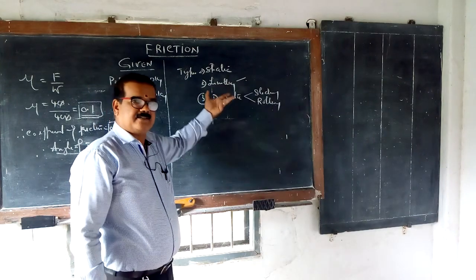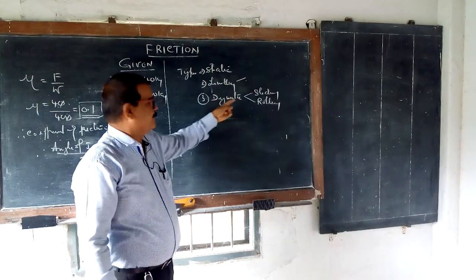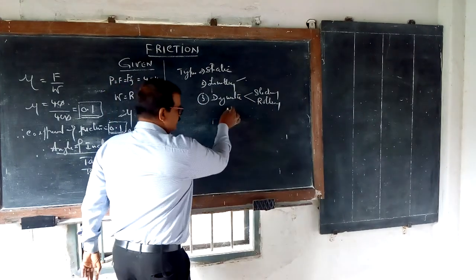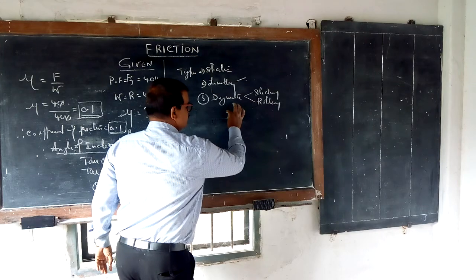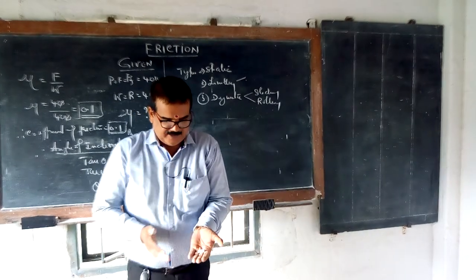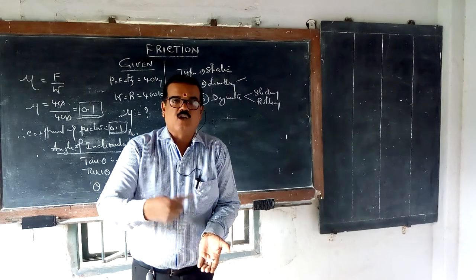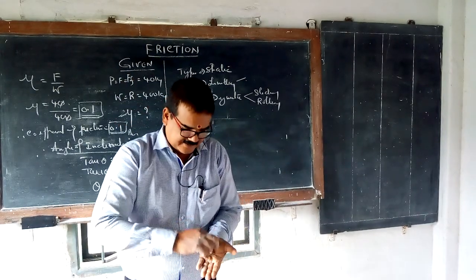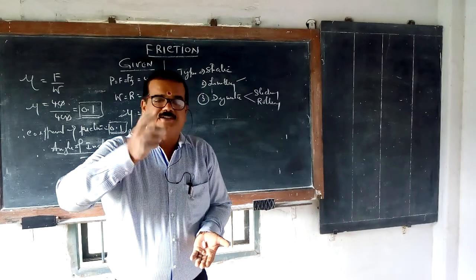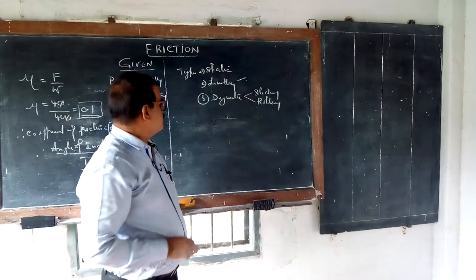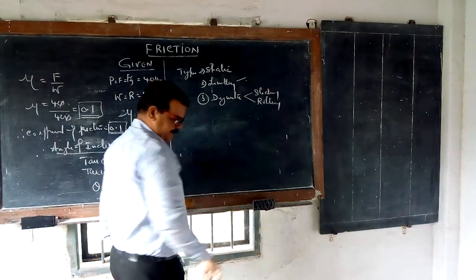At that particular time what the friction created in between is called limiting friction. Now once after it started moving this is called dynamic. There are two things. One is sliding. When I keep the round object it will roll. Now this is rolling. If it is a round object it is rolling. But even in rolling there is friction. Even in sliding there is friction. Amount of friction may be different. In rolling it may be less. In sliding it may be more.